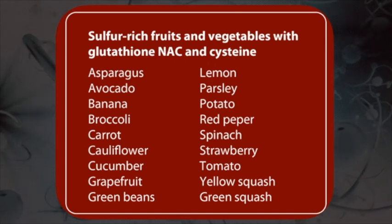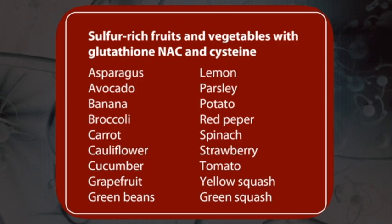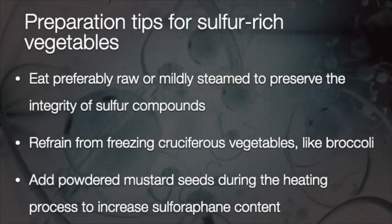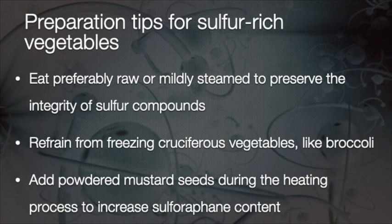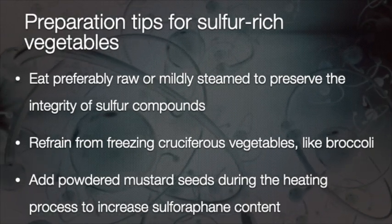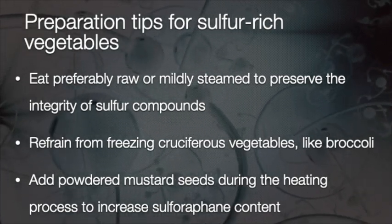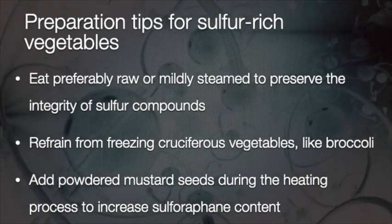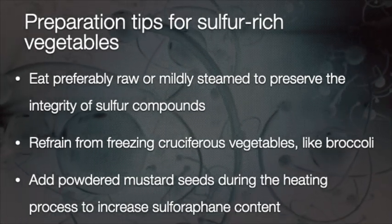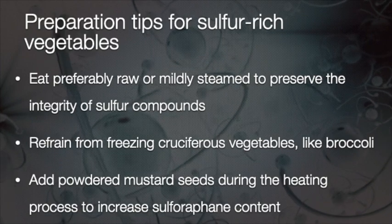One can also improve glutathione levels through natural foods — sulfur-rich fruits and vegetables which contain glutathione, NAC, or cysteine. These include asparagus, avocado, banana, broccoli, carrots, cauliflower, and more. It's important to preserve the integrity of sulfur compounds, especially in cooked vegetables. Eating raw where possible is good; finely sliced broccoli is beneficial. Avoid freezing cruciferous vegetables, and add powdered mustard seeds during heating to increase sulforaphane content — an extremely powerful anti-cancer molecule.